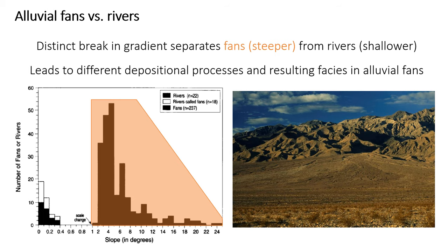How do alluvial fans differ from rivers? First, they form on a really different slope. There's a clear break in slope — rivers have very gentle slopes, basically nearly flat, with slopes less than half a degree or often even less. Alluvial fans occur on somewhat steeper slopes, often around a few degrees to maybe even 10 or 15 degrees. Because of the steeper gradient, there are different processes responsible for transporting and depositing sediment, and although the deposits are often coarse-grained like some rivers, they have distinctive textures that separate them from braided river or other fluvial sediments.